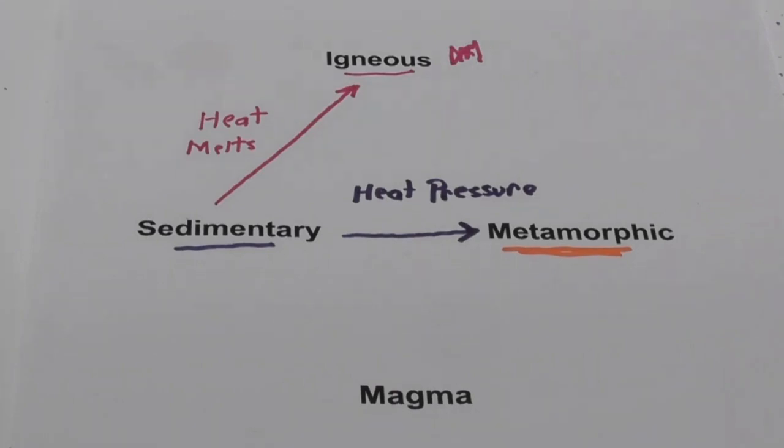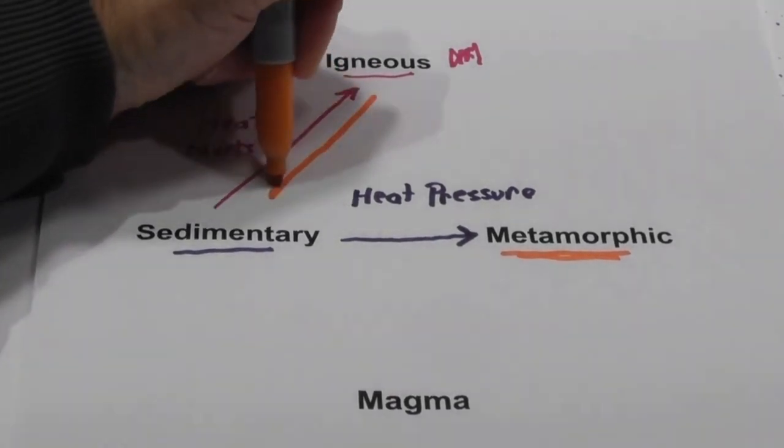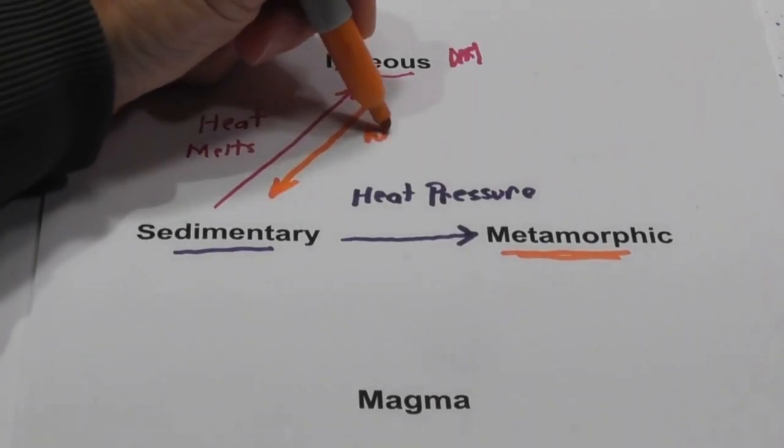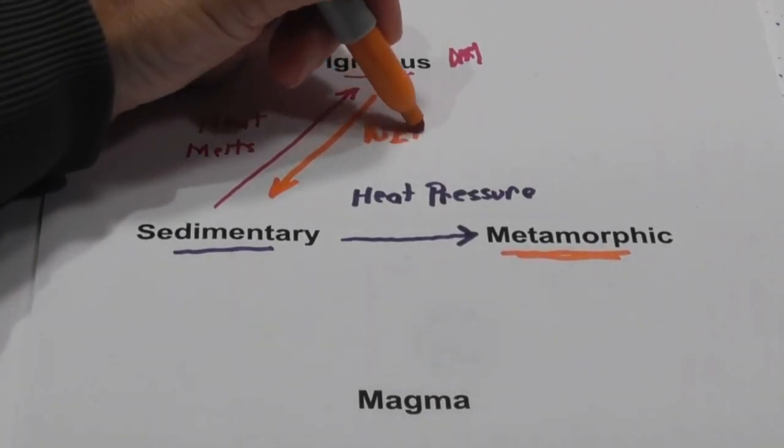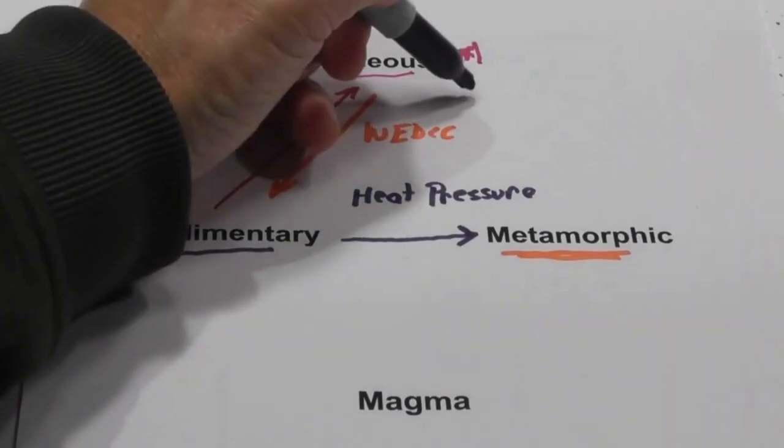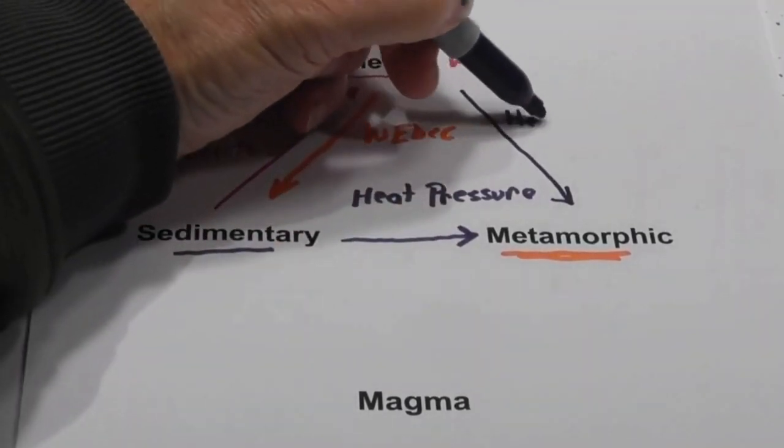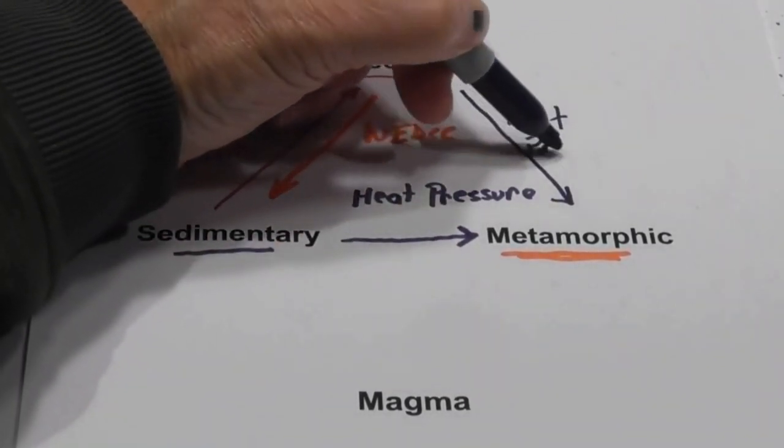Now, how about an igneous rock becoming a sedimentary rock? Well, it uses weathering, erosion, deposition, compaction, and cementation. How about an igneous rock becoming a metamorphic rock? Yes, you have it. It requires heat and pressure.